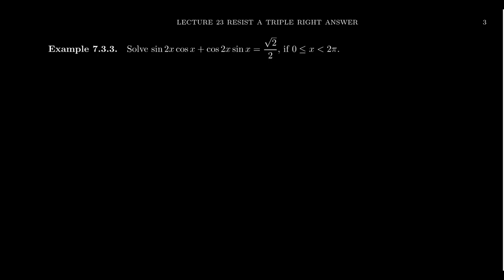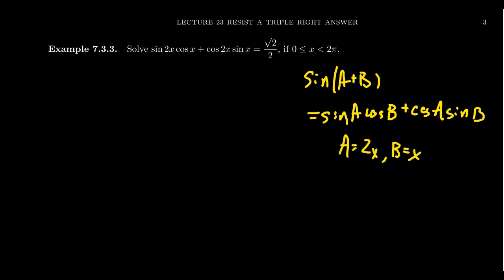The reminder here: if you take sine of a plus b, this is equal to sine of a cosine of b plus cosine of a sine of b. So if we set a equal to 2x and b equal to x, this is exactly what we need here.